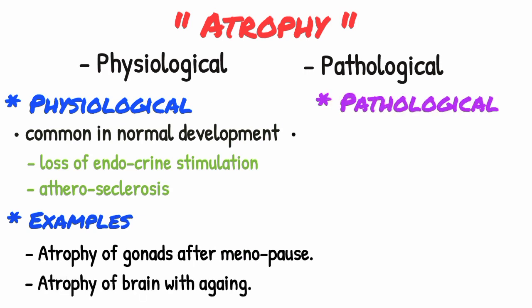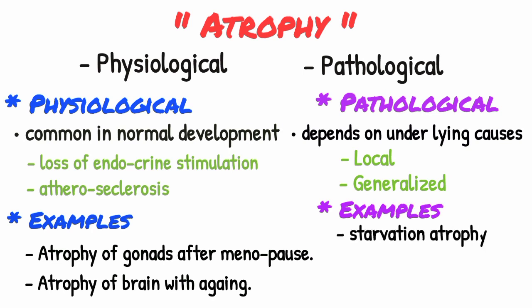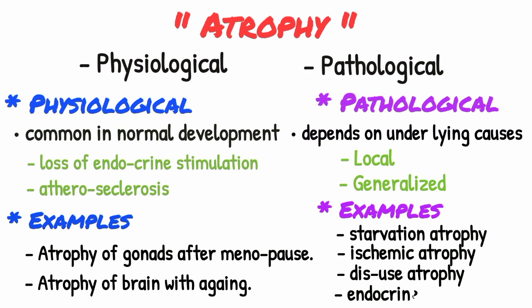Pathological atrophy depends on underlying causes and can be local or generalized, which includes starvation atrophy, ischemic atrophy, disuse atrophy, and endocrine atrophy.